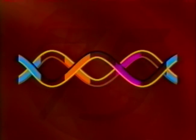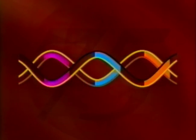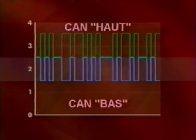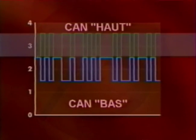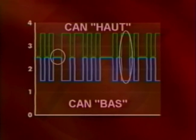Étant donné que le bus CAN est le plus rapide des bus de la Rover 75, il est utilisé là où la vitesse de communication est vitale, par exemple entre les systèmes de gestion moteur, de boîte de vitesse automatique et d'anti-patinage électronique. L'un de ces fils est appelé CAN bas et l'autre CAN haut. Le CAN bas commute entre 2,5 V et 1,5 V, alors que le CAN haut commute entre 2,5 V et 3,5 V. Lorsque les deux lignes du bus sont à 2,5 V, il n'y a pas de différence de potentiel entre elles : cet état est appelé état récessif et correspond au 1 logique. Si le CAN haut est commuté à 3,5 V et le CAN bas à 1,5 V, la différence de potentiel entre les deux lignes est de 2 V : cet état est appelé état dominant et correspond à la valeur logique 0.